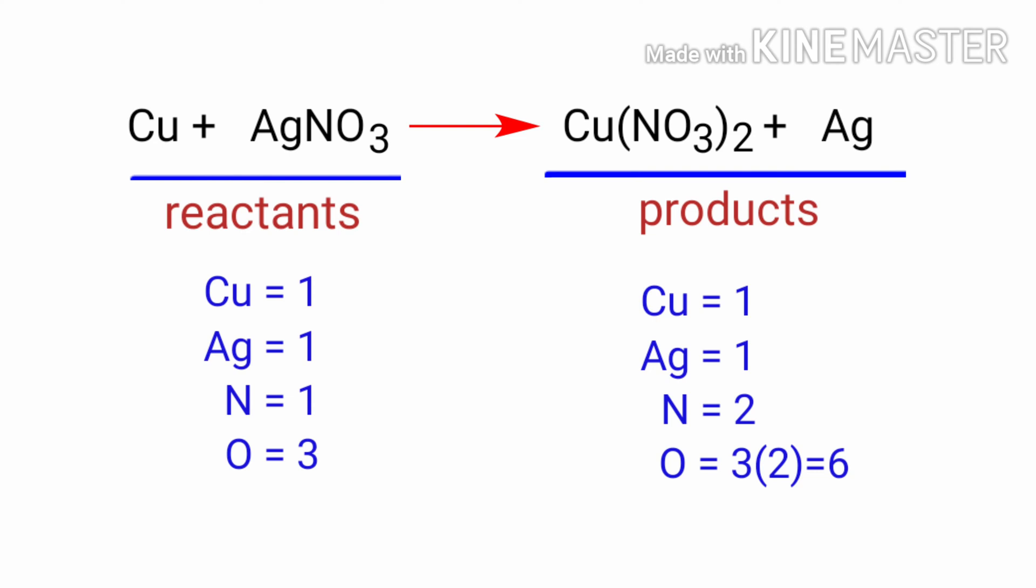The number of atoms are not balanced on both sides. To balance the chemical equation we need to make use of coefficients. A coefficient is a number that we place in front of a chemical formula.